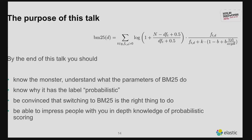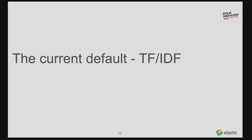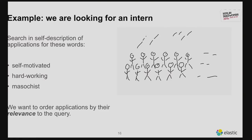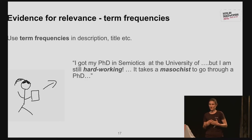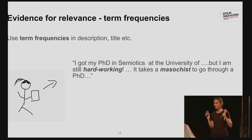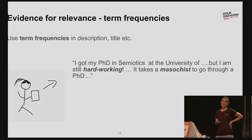Before we talk about the details of BM25, a quick reminder of what the current default is: TF-IDF. Sticking with our artificial example — we're looking for an intern and looking at self-descriptions for a 'self-motivated, hard-working masochist.' We want to order the applications by relevance to this keyword query. The only evidence we have for relevance is what's called the term frequencies — the number of times these keywords appear in the text.